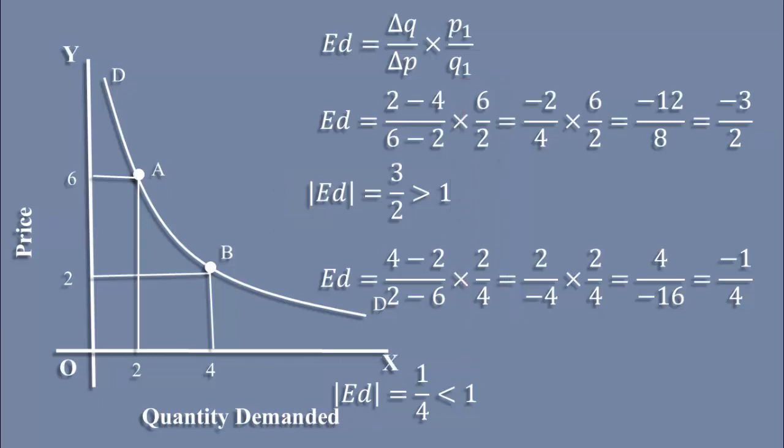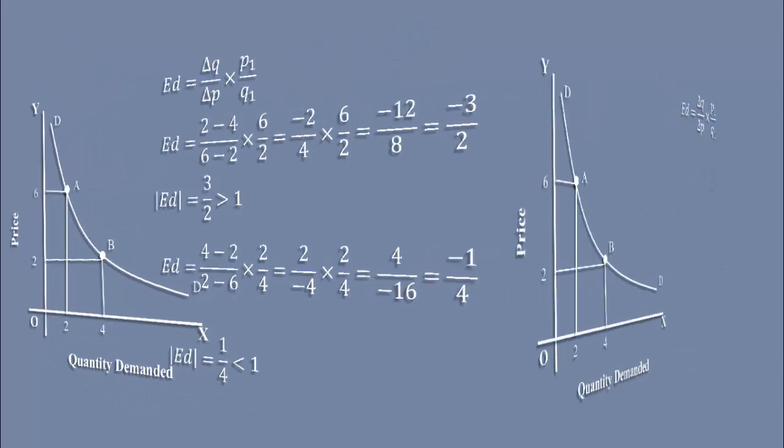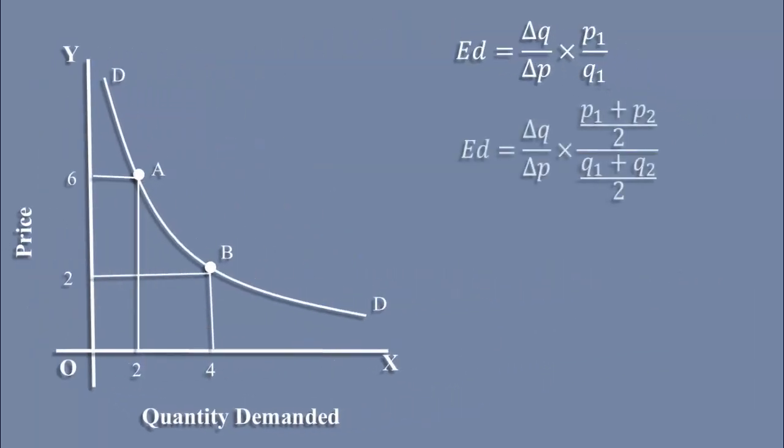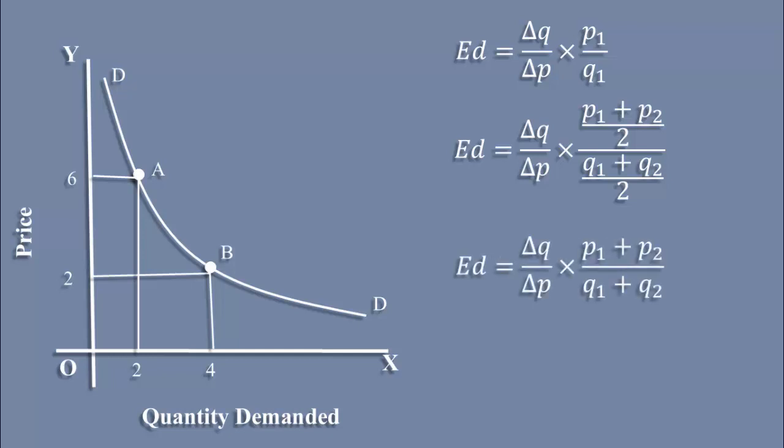What is the way out? The solution lies in taking the average of the two prices and two quantities. Accordingly, the arc method formula provides for this change. If we simplify, we get the final formula. Based on this, we discussed the arc method of calculating elasticity in the other video.